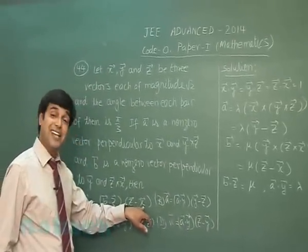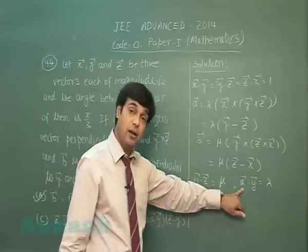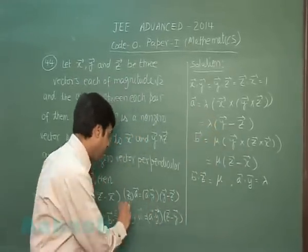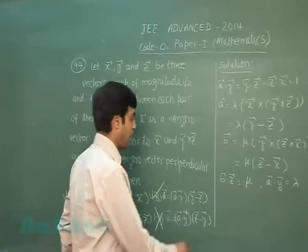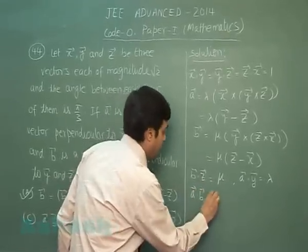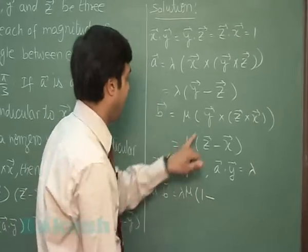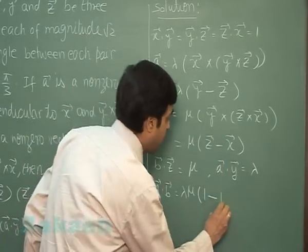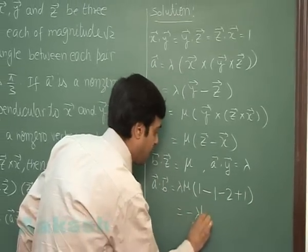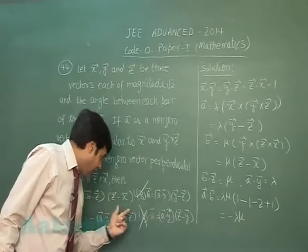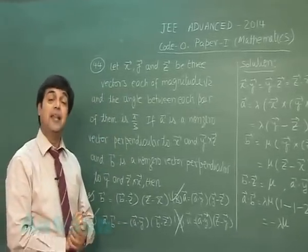b·z multiplied with (z - x) means μ multiplied with (z - x). This is b. This is clear. a·y, that is λ. What is a vector? Lambda times (y - z). So this is same. D is false because it reads (z - y). Next, c, we require a·b. Let's obtain a·b. λμ times [y·z, that is 1, minus y·x, that is 1, minus z·z, that is 2, plus z·x, that is 1]. So it comes -λμ, means minus of a·y into b·z, which is correct. So option C is also correct. So a, b, c are correct for this question. Let's move to the next one.